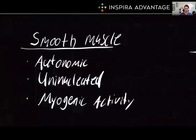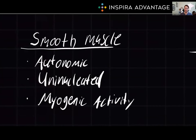The next major type of muscle are smooth muscles. Smooth muscle is the contractile unit found in organs and structures like blood vessels, the gastrointestinal tract, and the uterus. It is under involuntary or autonomic control and is uninucleated, meaning one nucleus. Smooth muscle can exhibit myogenic activity, which allows it to function independently of the nervous system — vital for processes like digestion and regulating blood pressure.